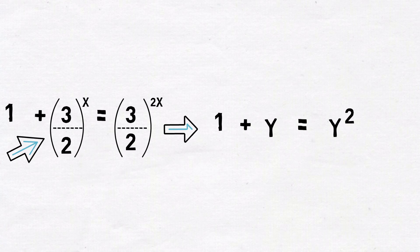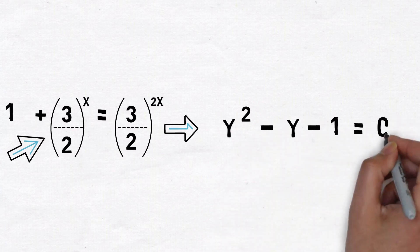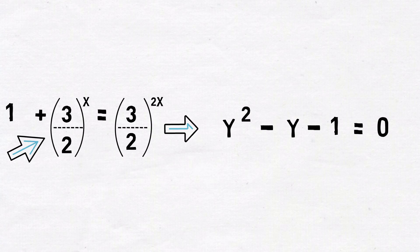Now suddenly our problem looks much simpler. And we also have a quadratic equation. Let's move all these elements to one side. We get y square minus y minus 1 is equal to 0.